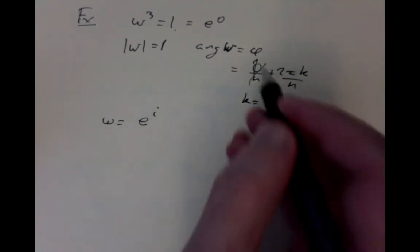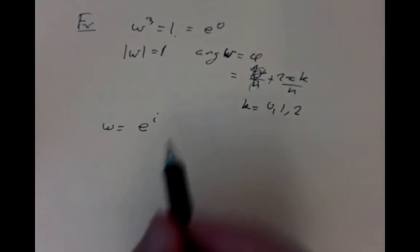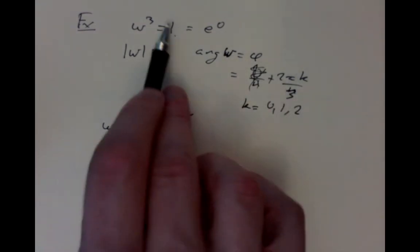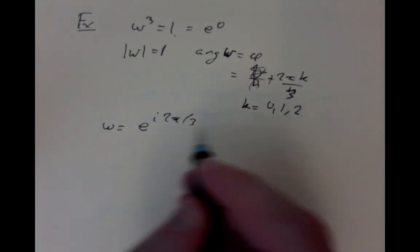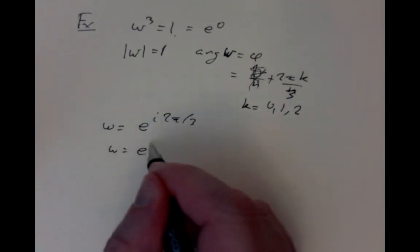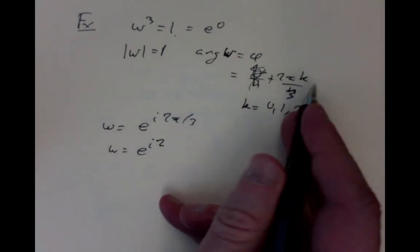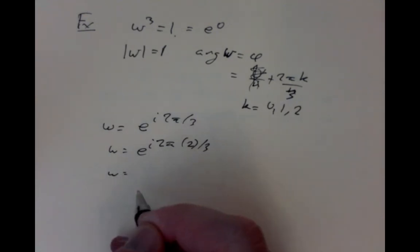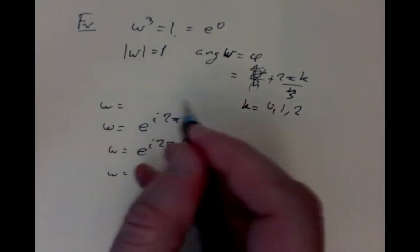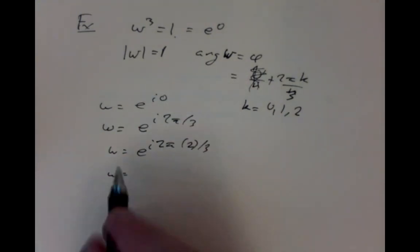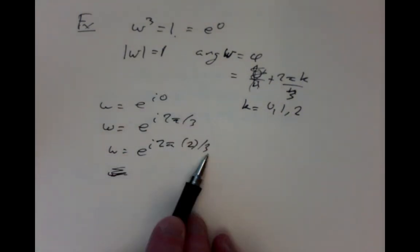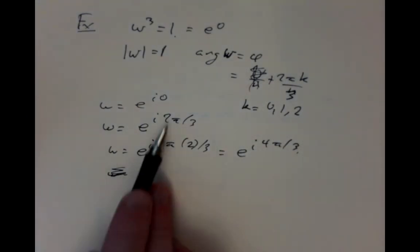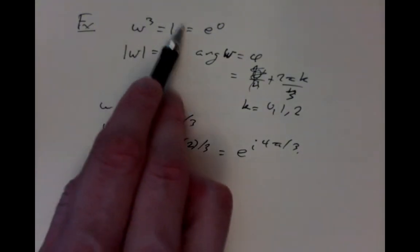If we write them out, that gives you w is, well, its length is 1, so it's just e to the i phi. Phi is one of these possibilities. It's 2 pi over, n is 3 here, we're doing the third power, so it's 2 pi over 3. w is e to the i 2 pi times 2 over 3. It should have been 0. w is e to the i 0. w is e to the i 2 pi over 3. And 2 pi times 2 over 3, which we can simplify as 4 pi over 3. Those are the three possible numbers that satisfy their cube is 1.